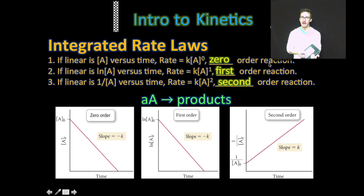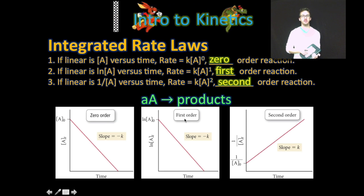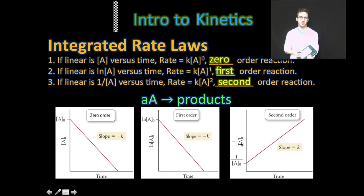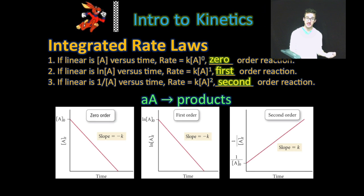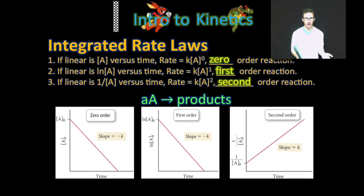If you have a zero order reaction, you are going to get a straight line when you plot the concentration of your reactant against time. If you have a first order reaction, you will get a straight line when you plot the natural log of concentration against time. And if you have a second order reaction, you will get a straight line if you plot one over the concentration against time. For zero and first order reactions, the slope is going to be equal to the negative of your rate constant. For second order reactions, the slope is your rate constant.